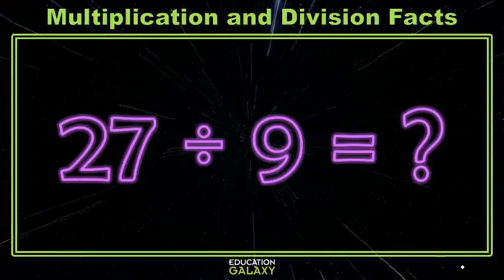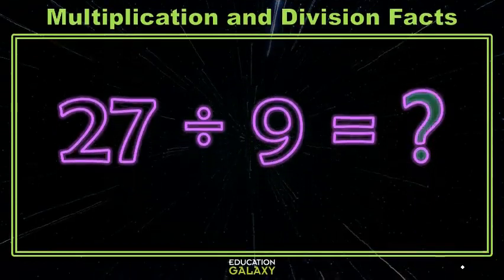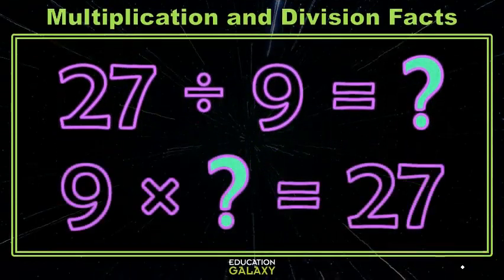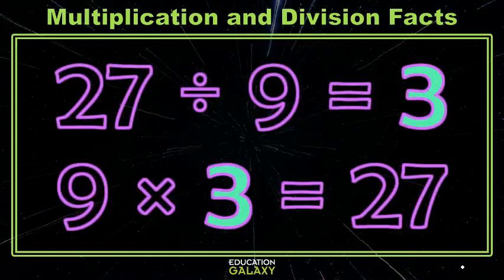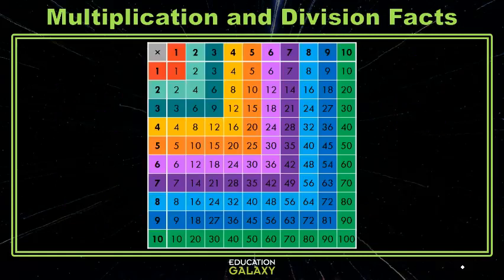Let's do one example together. 27 divided by 9. Let's say I don't have that memorized, but I say, hey, I do know that 9 times something is 27, and I'm so good at my 9s and my 3s that I remember that fact as well. So now it's up to you. Time to memorize.